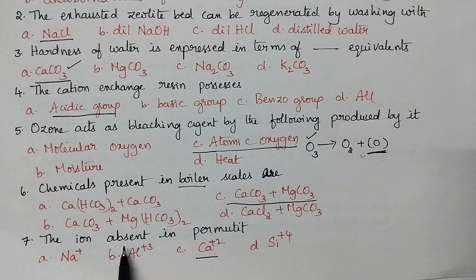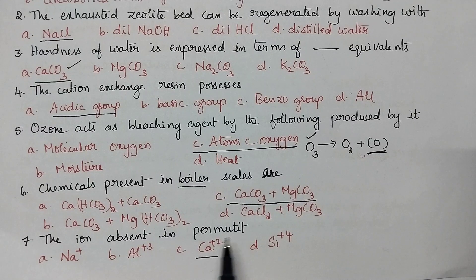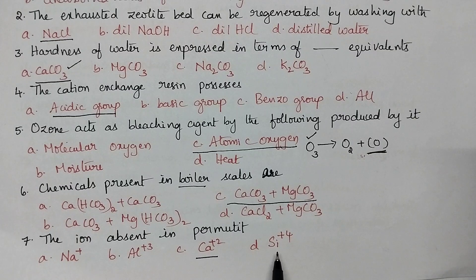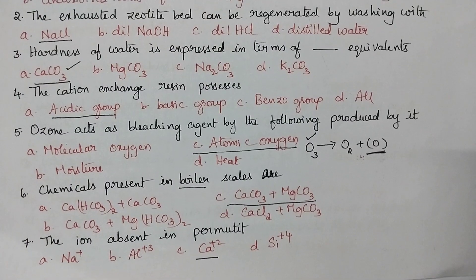The ion absent in permutit: permutit generally contains sodium, aluminium, and silica ions. So, calcium ions are absent in permutit.